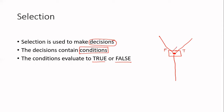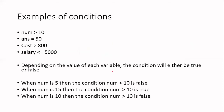That decision that we're going to be making, we're going to be drawing it as a diamond shape. That decision is going to evaluate to either true or false. If it's true, that's the direction we take. And if it's false, we move in a different direction. So let's understand conditions a little better, since our decisions are going to contain conditions. This could be a typical condition: Numb is greater than 10. Conditions are either true or they're false.